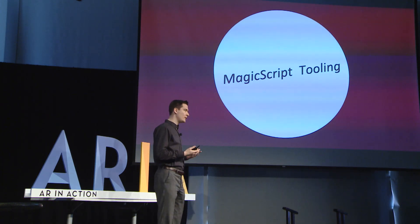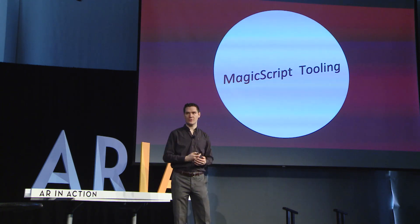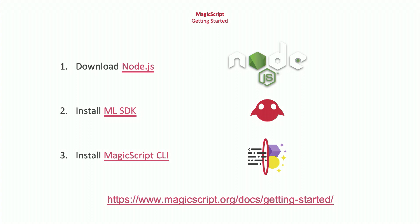We've got some really cool tools to enable this and really speed up the onboarding experience for developers. The command line utility we've built — MagicScript CLI — is built on Node.js in JavaScript, and again, all open-sourced on GitHub. To get up and running, you'll need Node.js installed on your system, then install the Magic Leap SDK to compile for LuminOS, and then the MagicScript CLI is installed using NPM. More details are available at the URL shown for all of these steps.